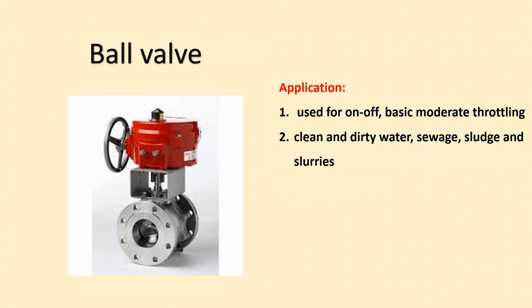Next is the ball valve, which is widely used everywhere in the process industry. It performs the same functions as on-off and throttling modes, and can also be used for chemical slurries, abrasive fluids, and other suspended process fluids.